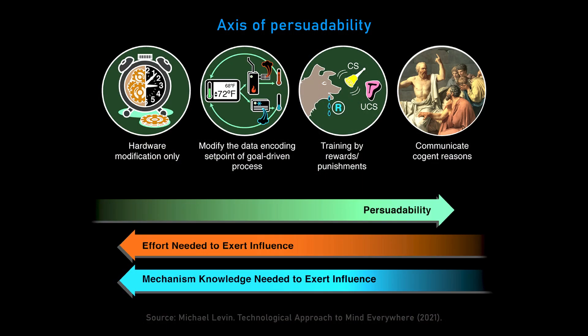When you tell me that something has some degree of intelligence, what you're really saying is: this is the set of tools I'm going to deploy, and we can all find out how that worked out for you. I wanted to be clear with my colleagues that this was not just a project in philosophy — it had very specific empirical implications that are going to play out in engineering and regenerative medicine. 'Mind everywhere' reflects the idea that we don't know yet where different kinds of minds are to be found, and we have to empirically figure that out.